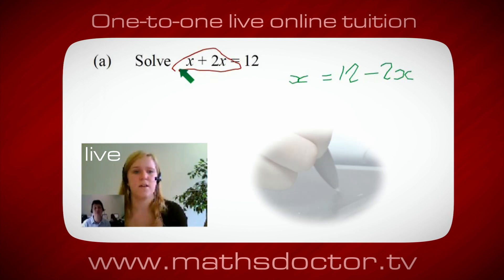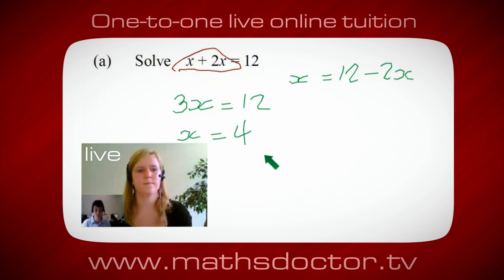Oh, OK, it's 3x, isn't it? Yeah, absolutely. So 3x equals 12. Oh, and so x equals 4. Brilliant, spot on, well done.